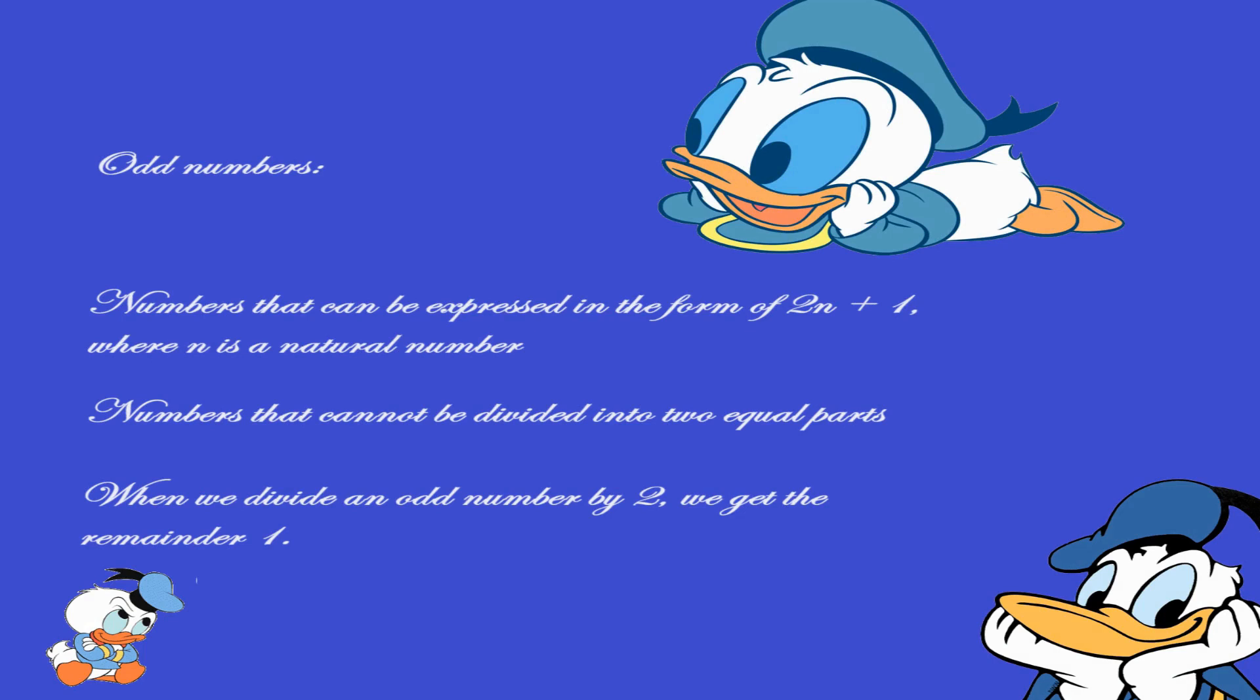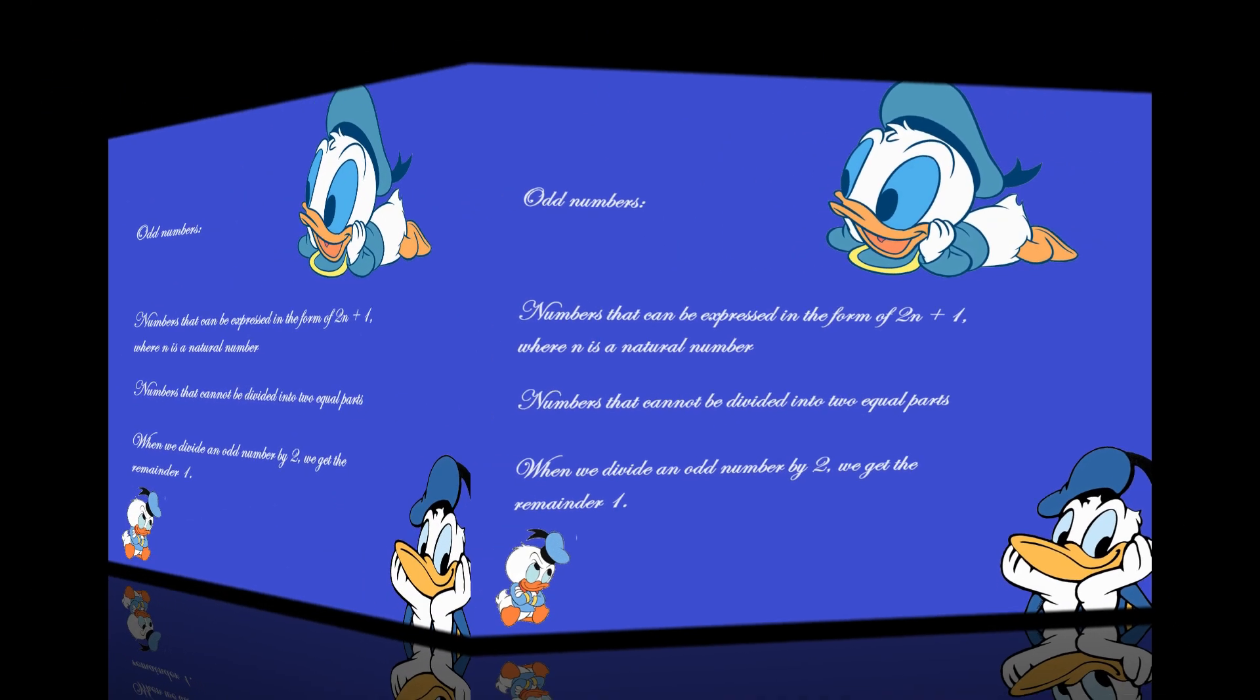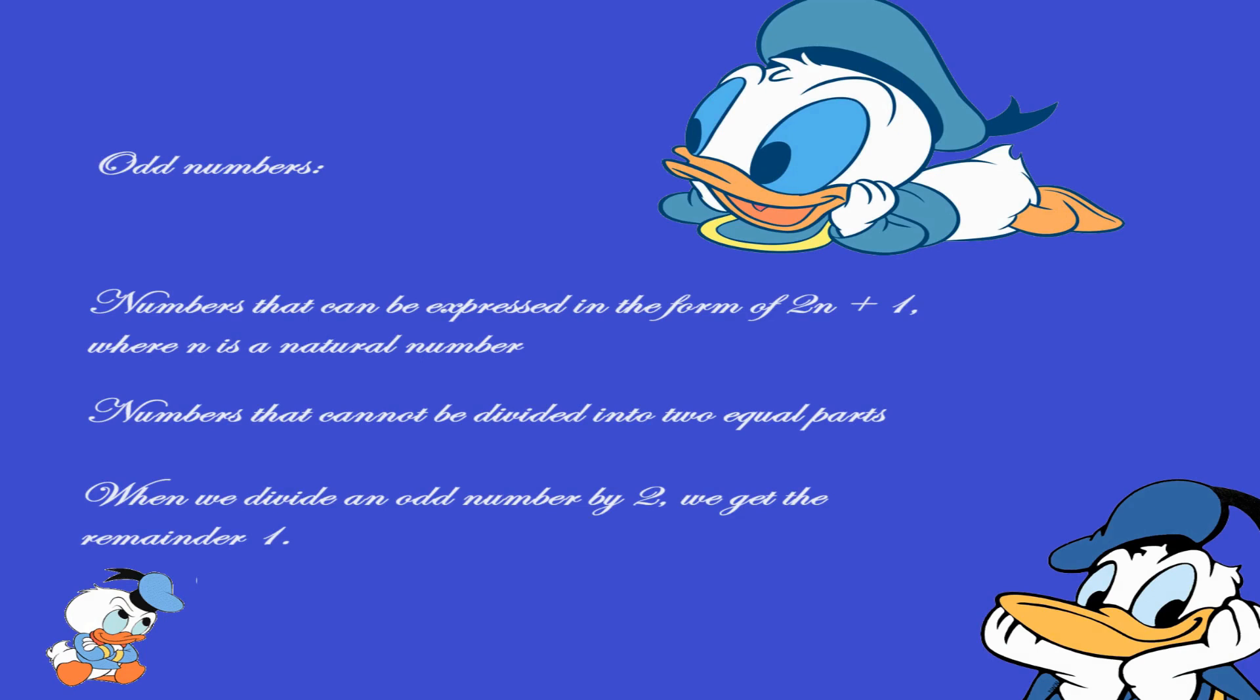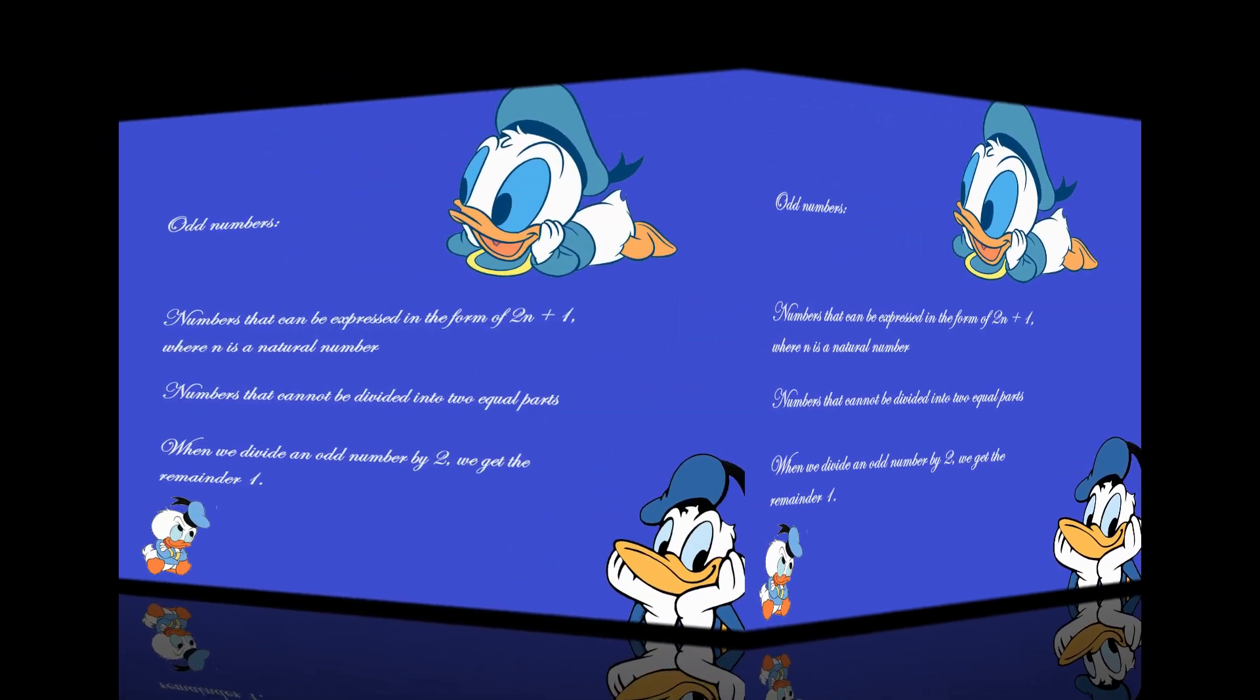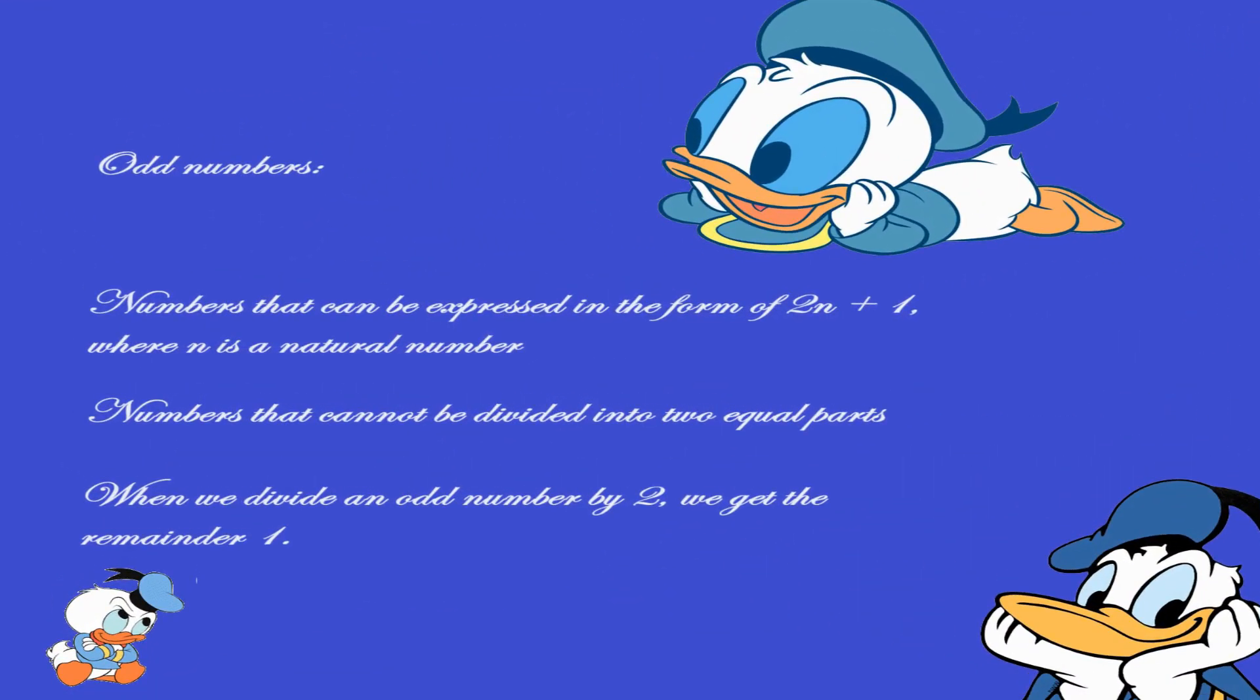Odd numbers. Let's see what odd numbers are. Numbers that can be expressed in the form of 2n plus 1, where n is a natural number. Numbers that cannot be divided into two equal parts. When we divide an odd number by 2, we get the remainder 1.